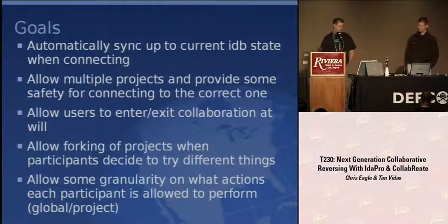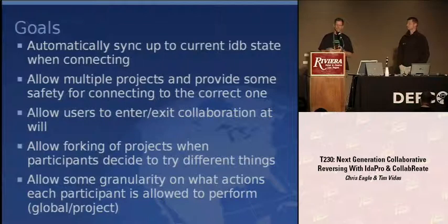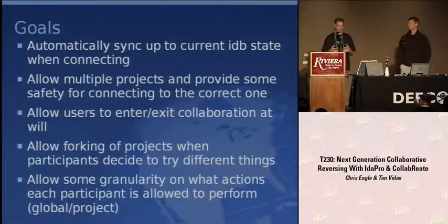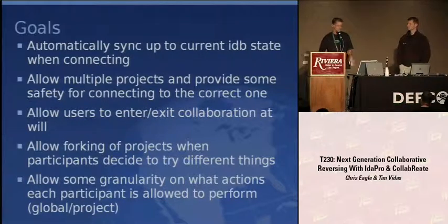Along with the checkpoint notion was the idea of forking a project. If you'd like to go down two different paths, a group can go off and work on one path, creating an entirely separate project while some stay in the original. There's a forking capability that creates a parallel project allowed to diverge down different paths. You can rejoin up to any of the fork points and follow any of them.